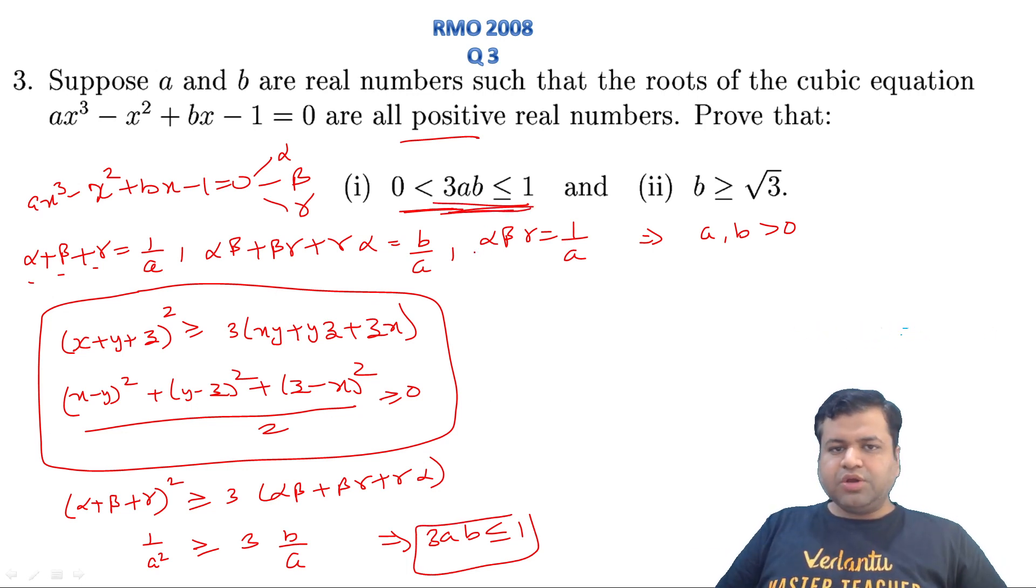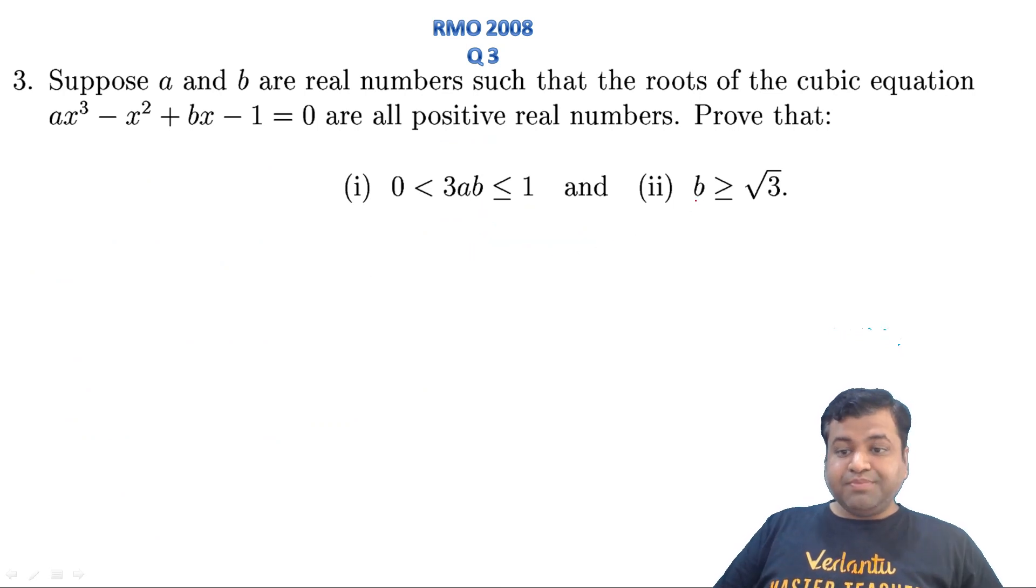So 3ab is less than or equal to 1, and that is what we have to prove in the first part. So this inequality is a very standard, very simple inequality.